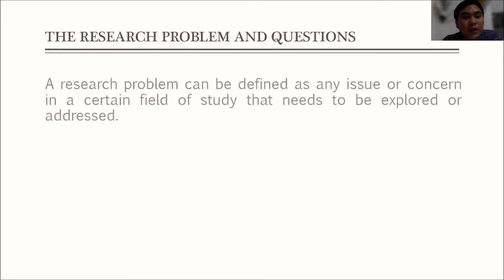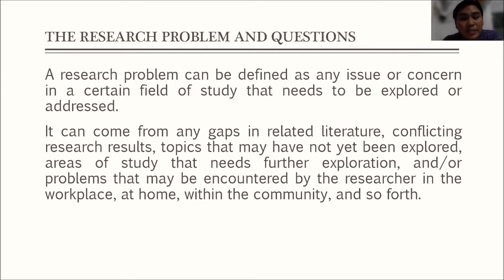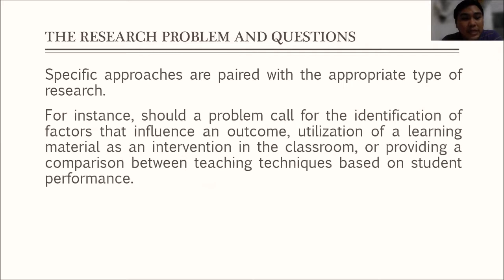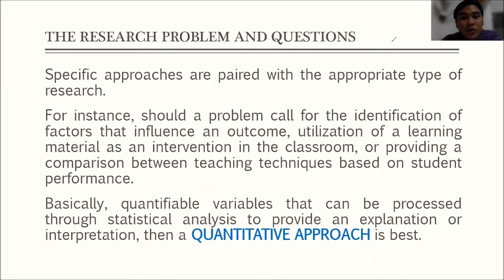Let's start with the research problem. The research problem is an issue or concern in a certain field of study that needs to be explored. Normally this arises depending on where the researcher would want to do his study. Some approaches need a certain type of research. For instance, if the research calls for quantifiable variables — variables that are numerical in nature and can be processed through statistical analysis — then a quantitative approach is the best option.